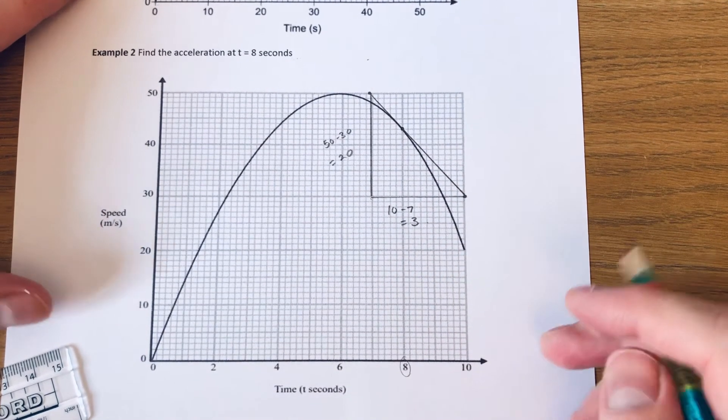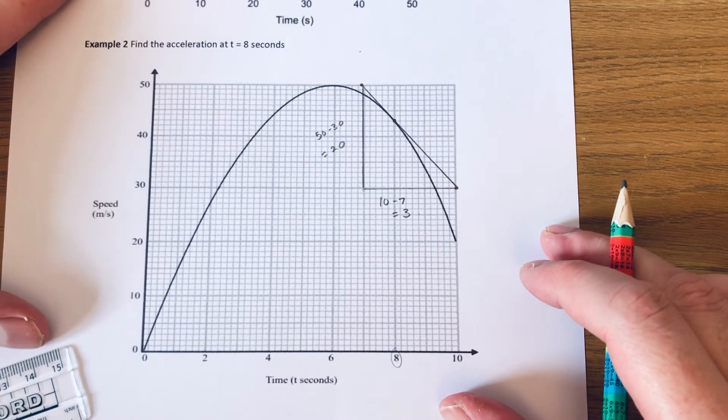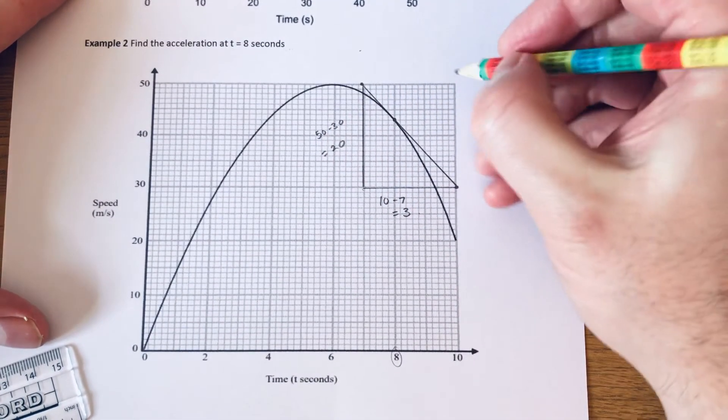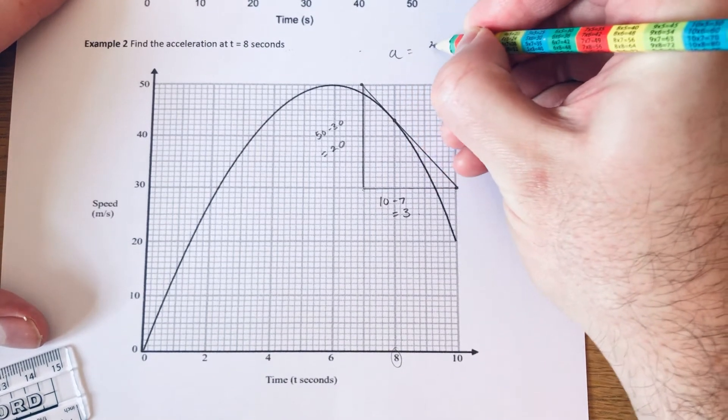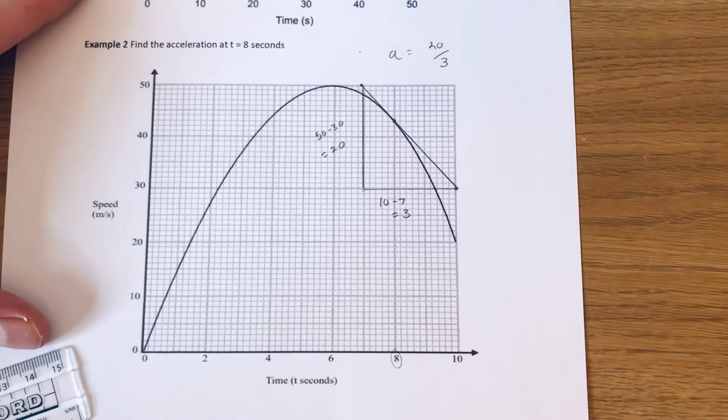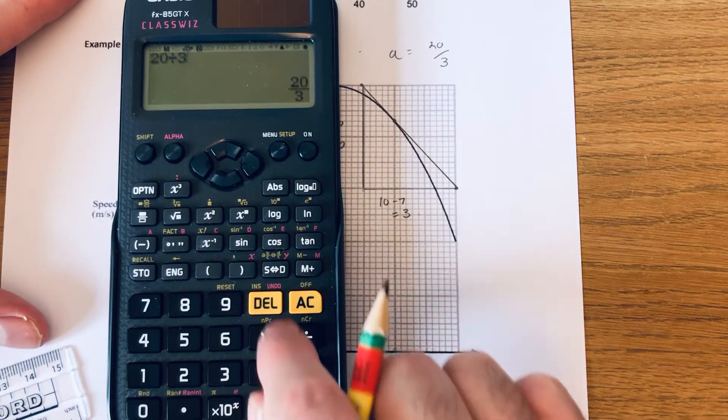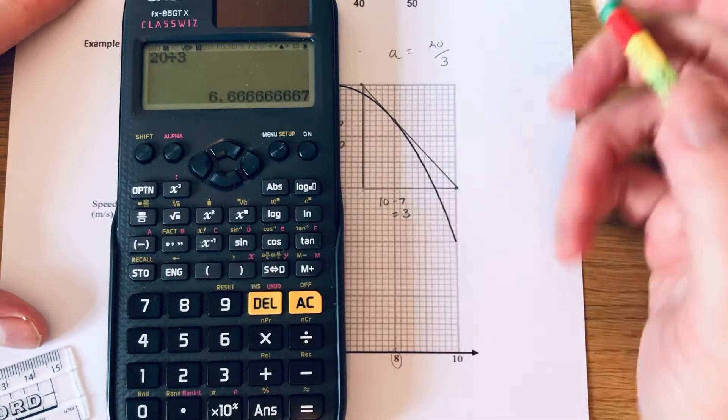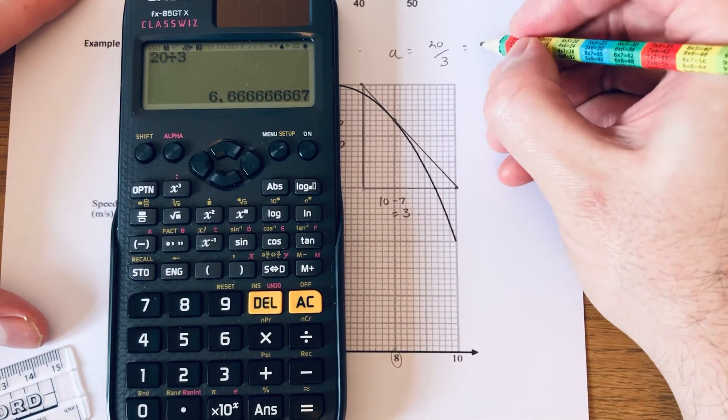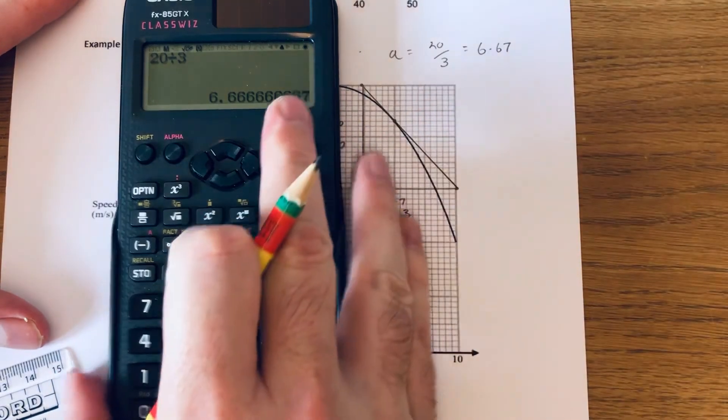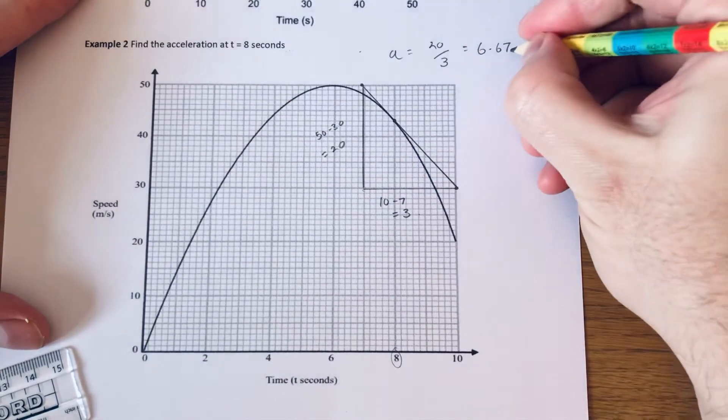So again to get our acceleration we just need to do 20 divided by 3. So again we've got to do this on the calculator to two decimal places. So we're looking at 6.67 and that's meters per second squared.